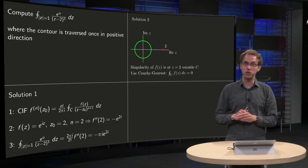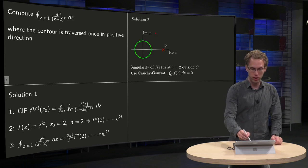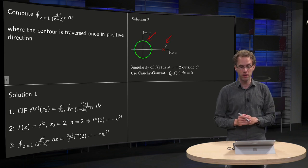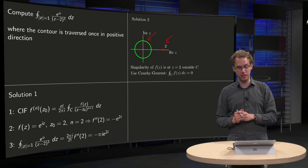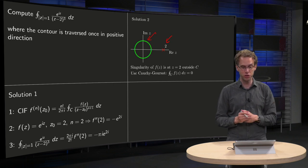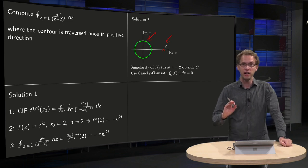Second solution: we make the picture of our contour and of our singularity at z equals 2, and then we see the singularity of f(z) at z equals 2 is outside C. So we use Cauchy-Goursat, and we conclude that our integral equals 0. Is this correct now?